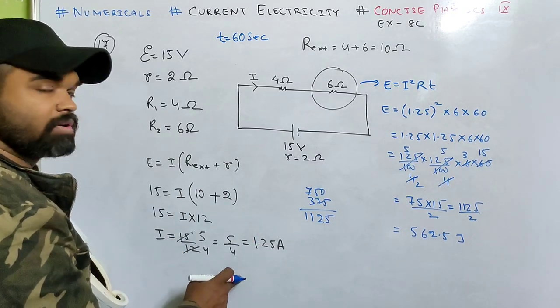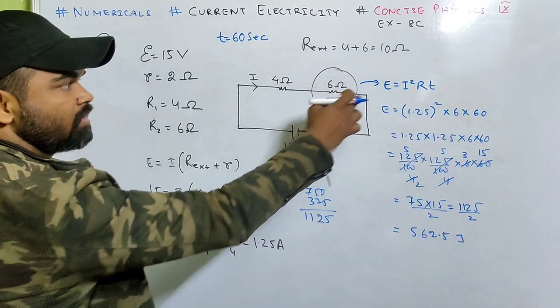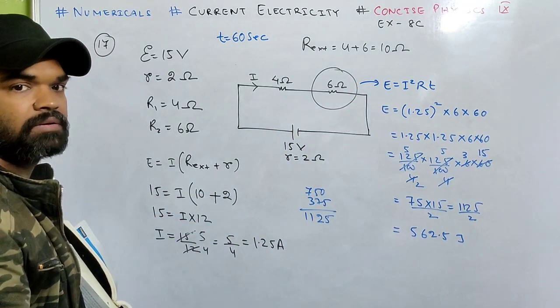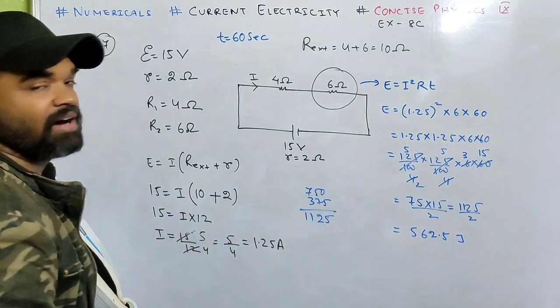So 562.5 joules of energy is spent per minute in the 6 ohm resistor. Very easy - first calculate the current flowing through the circuit, once you got the current then use E equals I squared R T, substitute the value and you'll get the answer.